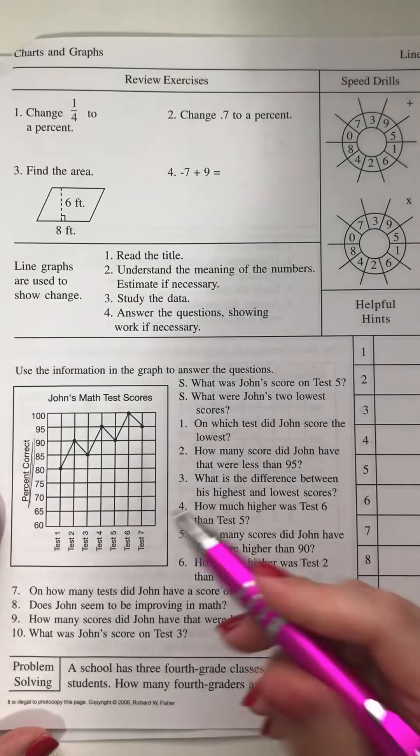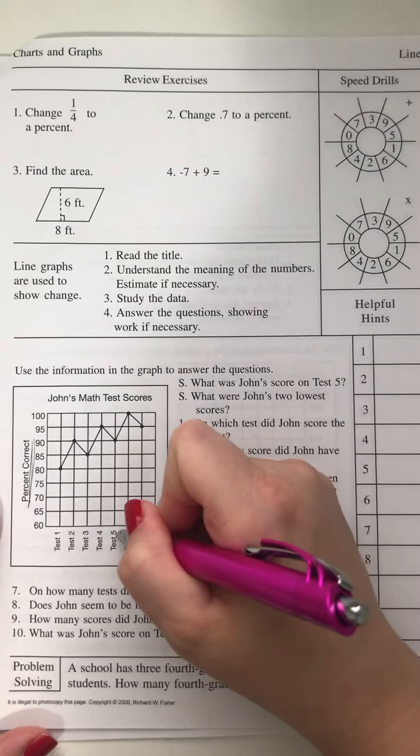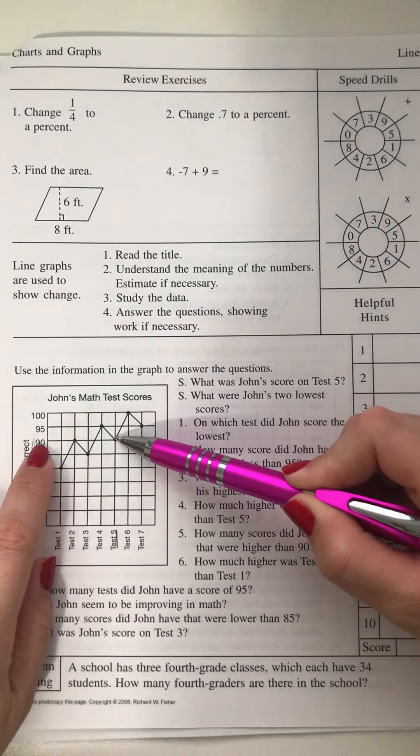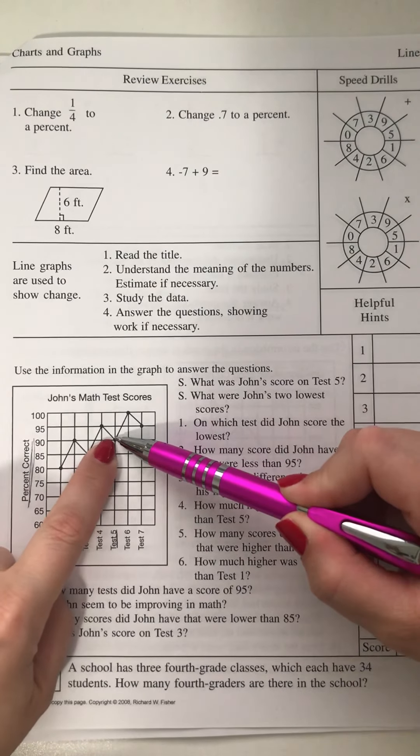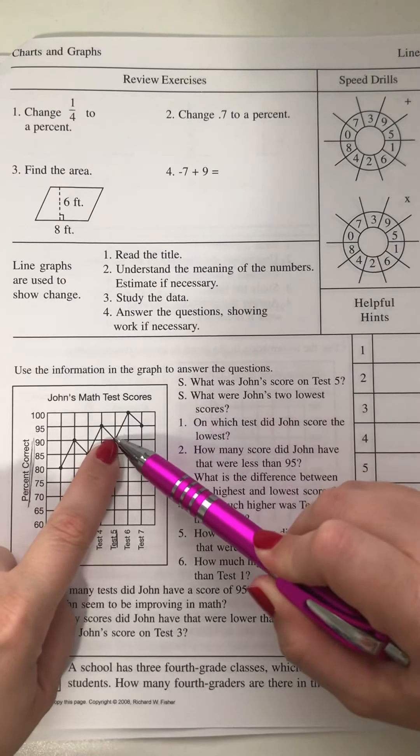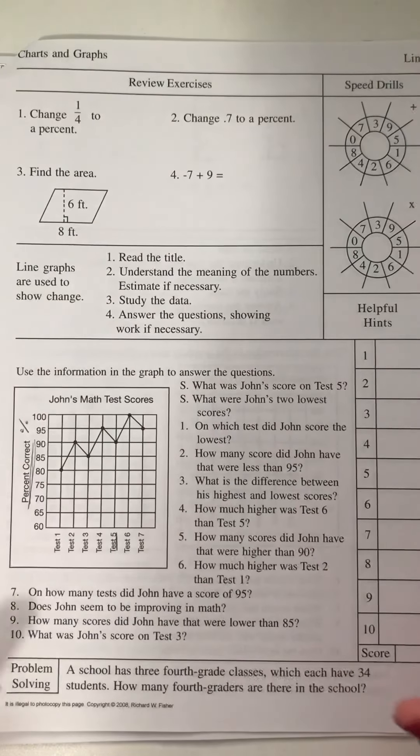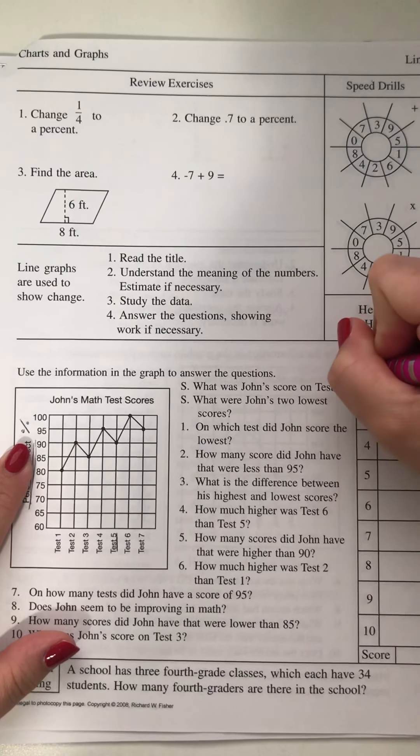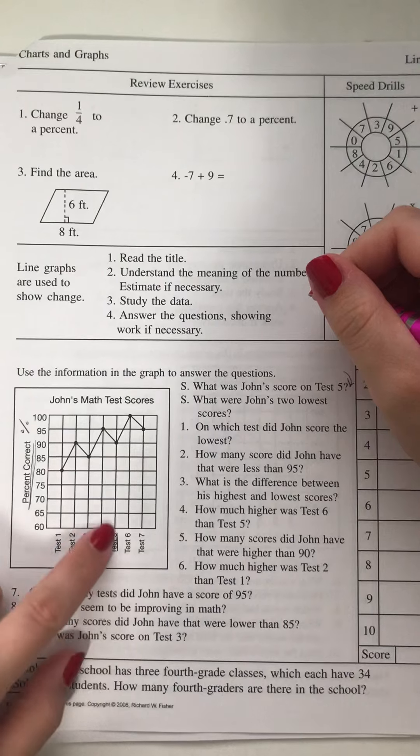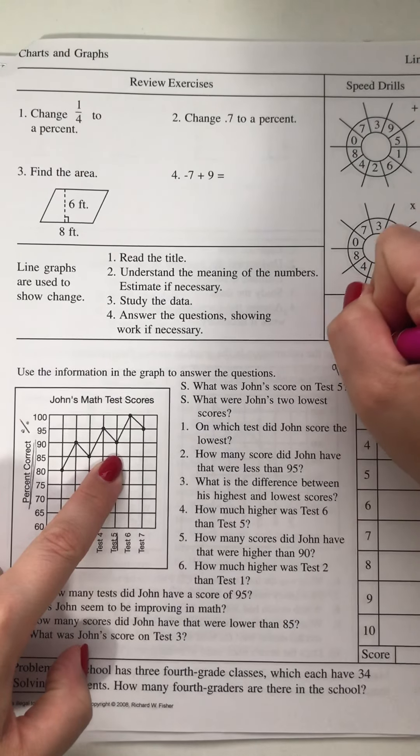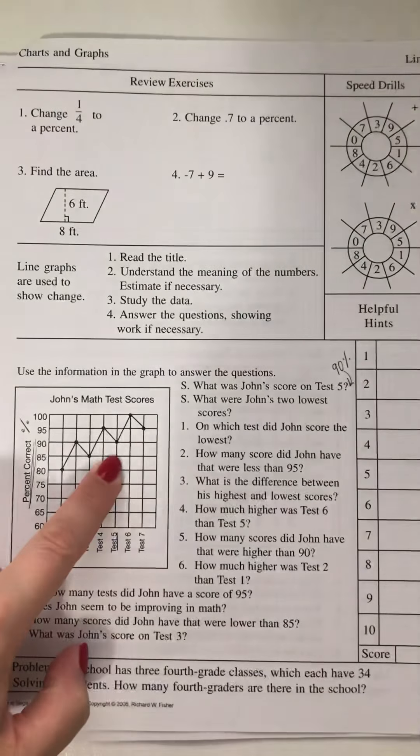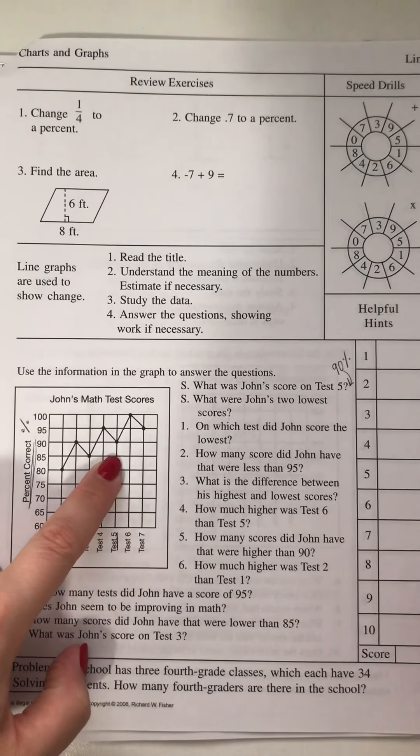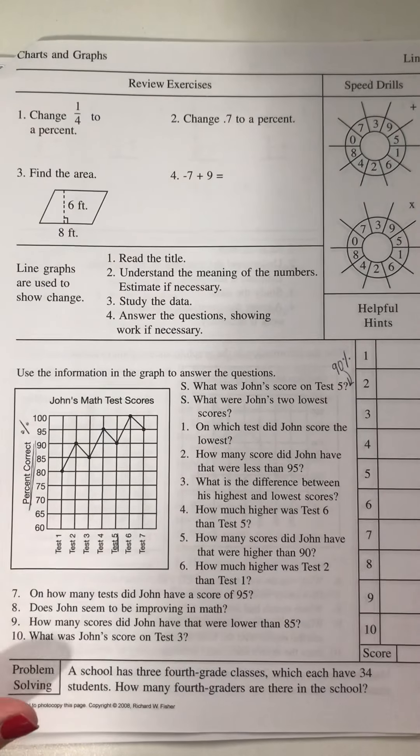So let's start with the first sample. The first sample says, what was John's score on test 5? So we would go to test 5, and we would find where the dot lands, and it lands on the 90 line. So we know that John's score on test 5 was 90%. So remember, this is percent correct. So all of your answers that require a number should have a percent sign. So there's not a lot of room here, but I'm just going to put it right here. John's test score was 90%. Then it says,